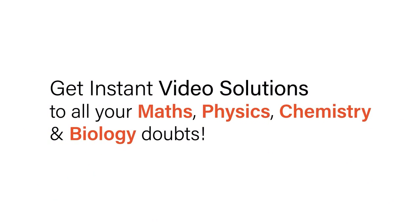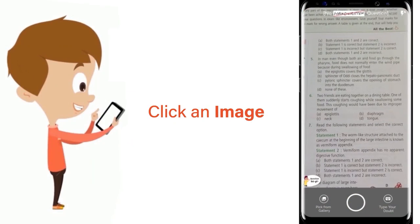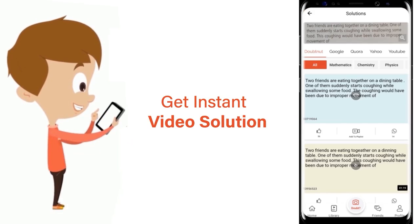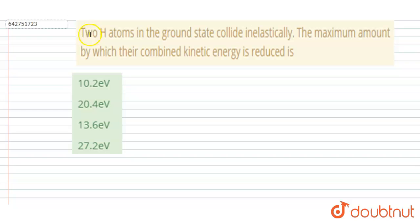With Doubtnut, get instant video solutions to all your maths, physics, chemistry, and biology doubts. Just click the image of the question, crop it, and get instant video solution. Download Doubtnut app today. Hello everyone. Two H atoms in ground state collide inelastically. The maximum amount by which their combined kinetic energy is reduced - you have to tell the maximum amount by which their combined kinetic energy will get reduced.